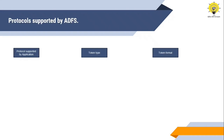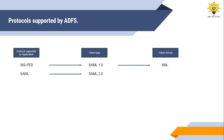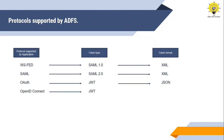There are multiple types of tokens that can be issued by ADFS and consumed by applications. If an application uses the WSFED protocol, ADFS will send a SAML1 token in XML format. If an application supports the SAML protocol, a SAML2 token will be sent in XML format. If an application supports the OpenID Connect protocol, ADFS will send a JWT token in JSON format. So depending on the protocols the application supports, ADFS constructs and sends the appropriate token.